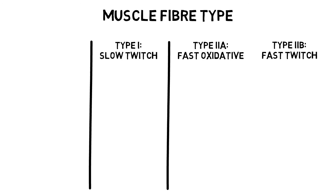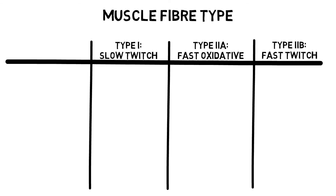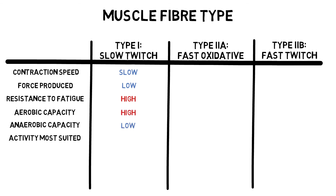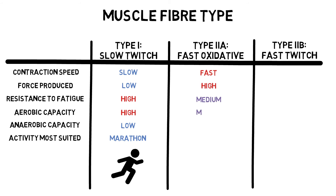When defining the characteristics of these fibres, it is useful to remember that Type 1 and Type 2b will always be at opposite ends of the spectrum. Type 1 fibres are slow and do not produce much power, but their high resistance to fatigue and aerobic capacity makes them perfect for endurance activities such as the marathon. Type 2a fibres are the perfect middle ground between slow and fast, making them great for middle distance activities that require elements of both endurance and power, such as the 800 metres or 1500 metres.